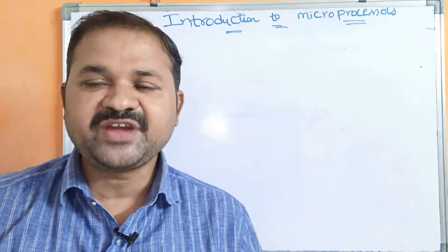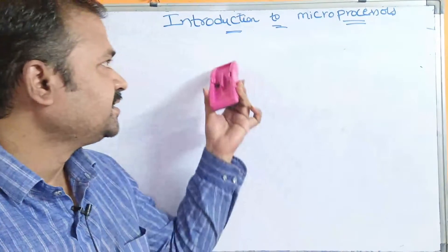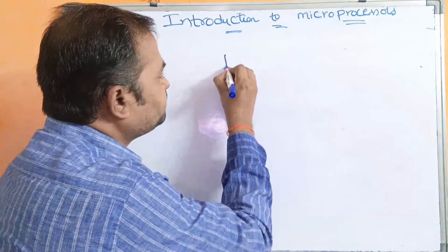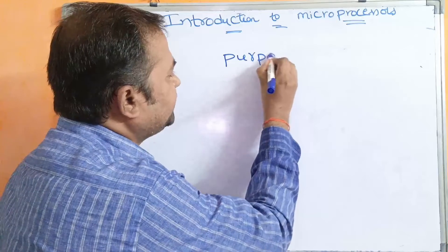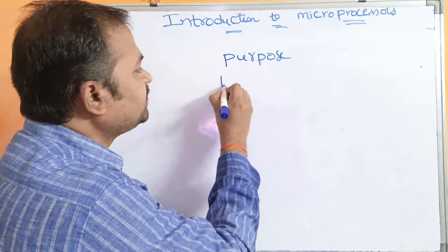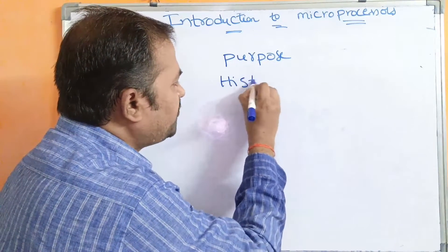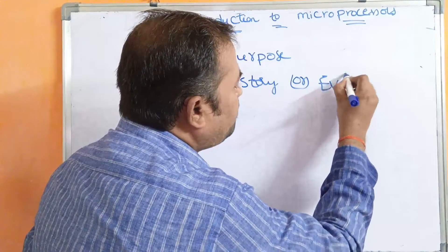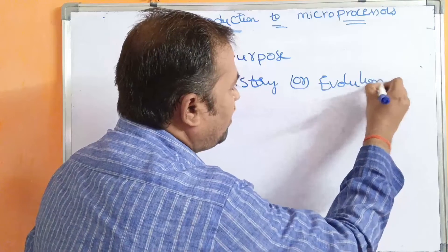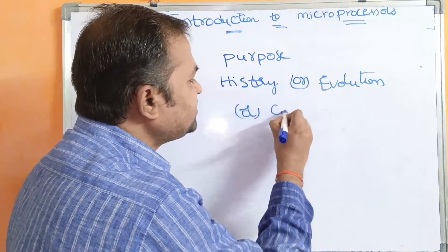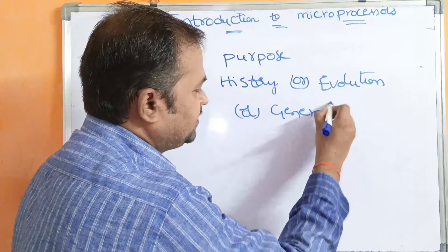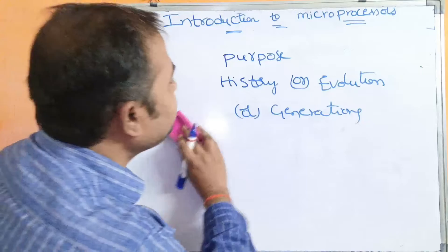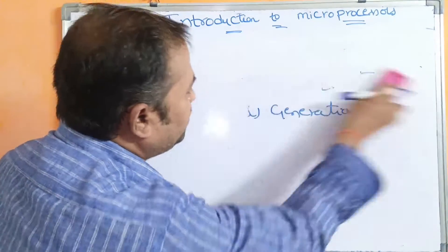In this video, we are going to discuss about introduction to microprocessors — what is the purpose of a microprocessor, the history of microprocessors, which can also be called as evolution or various generations of microprocessors. Let us discuss all these things in this video. First, let us see what is the purpose of a microprocessor.